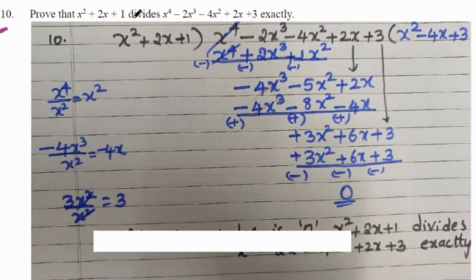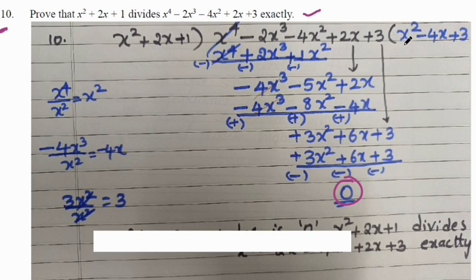Next, prove that (x² + 2x + 1) divides (x⁴ − 2x³ − 4x² + 2x + 3) exactly. To prove it divides exactly, we use the division method. Dividing, we get the quotient as x² − 4x + 3 and the remainder is 0. Since the remainder is 0, x² + 2x + 1 divides this polynomial exactly.